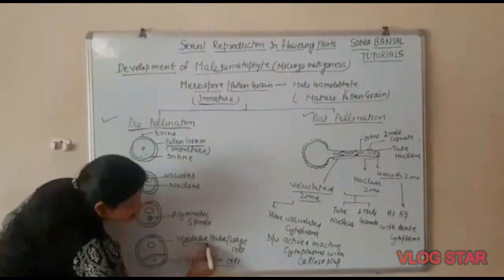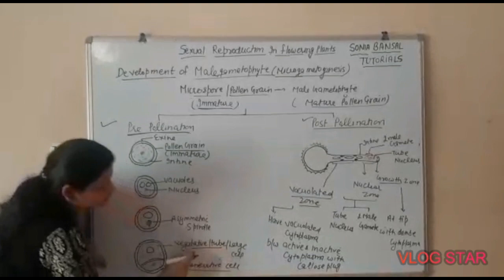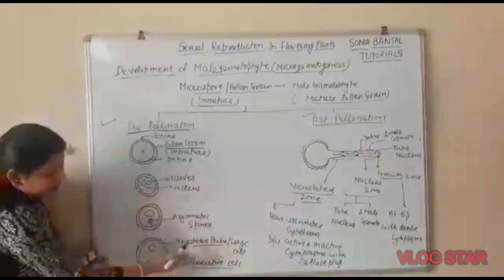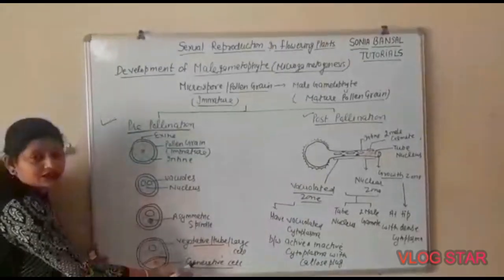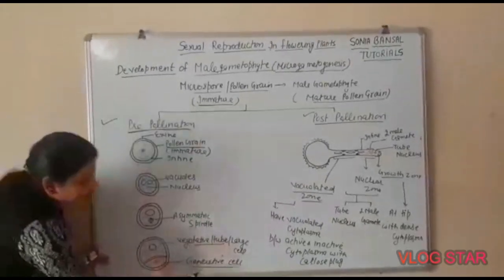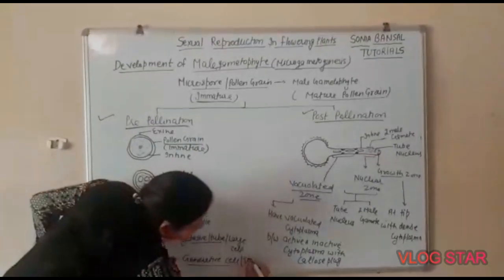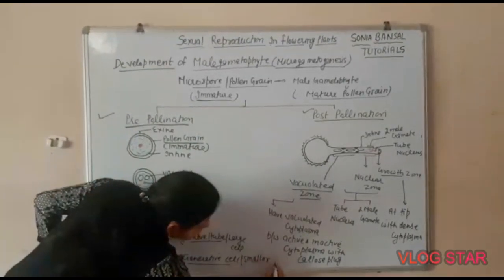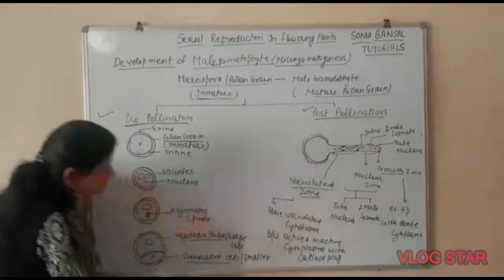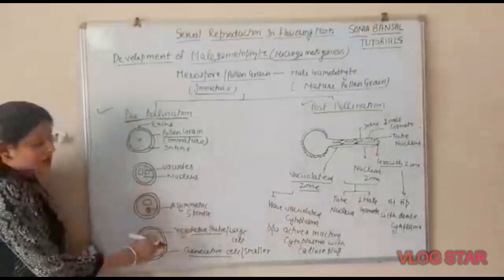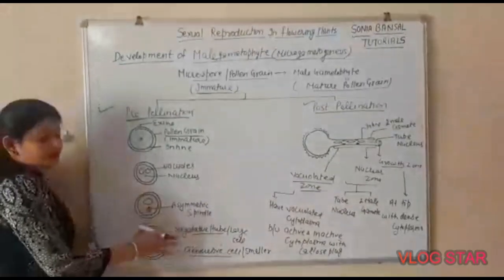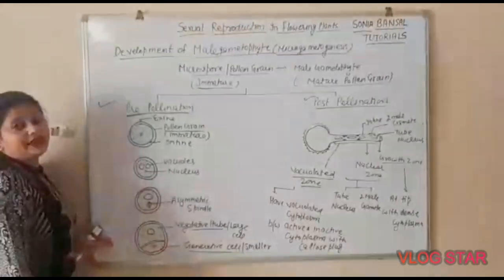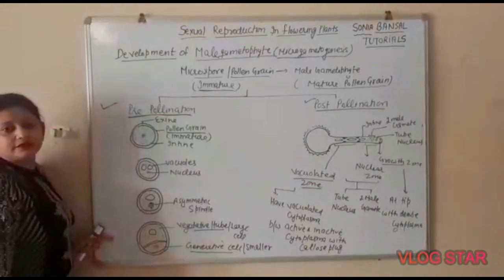This results in the formation of two cells. One is the large cell called the vegetative cell, and the second is the smaller cell called the generative cell. When both the generative cell and vegetative cell are present, the pollen grain is said to be in the mature state.